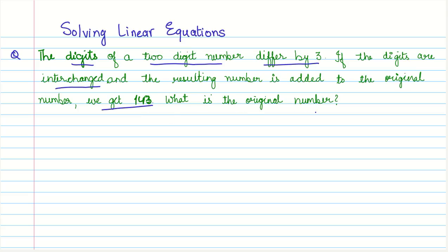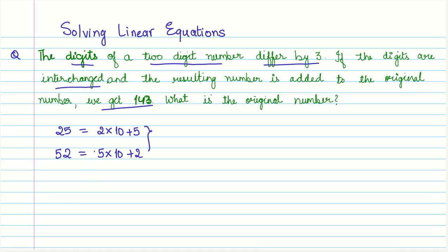We need to find the original number, and we know it is a two-digit number. Let us understand how we can write a two-digit number. Say we have the number 25. In expanded form it is 2 times 10 plus 5. When we interchange the digits, 25 becomes 52, which we write as 5 times 10 plus 2. This is the concept we will use to solve this problem.